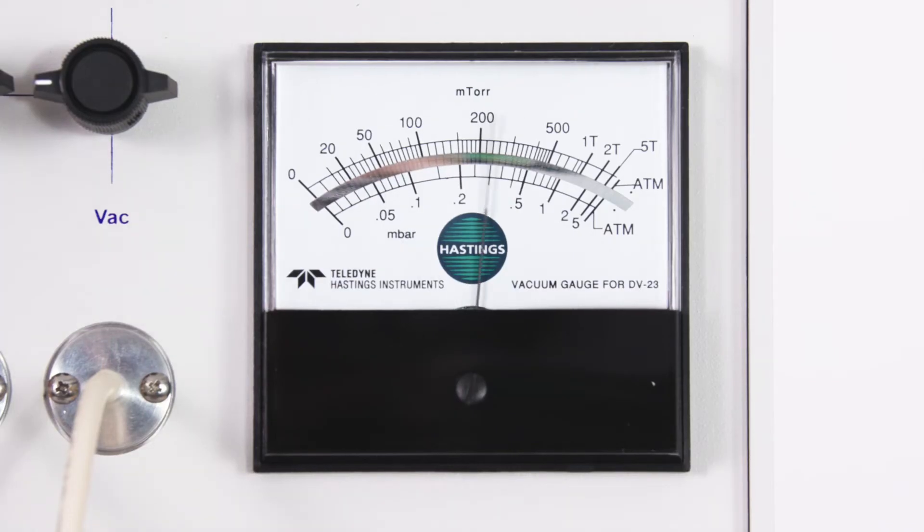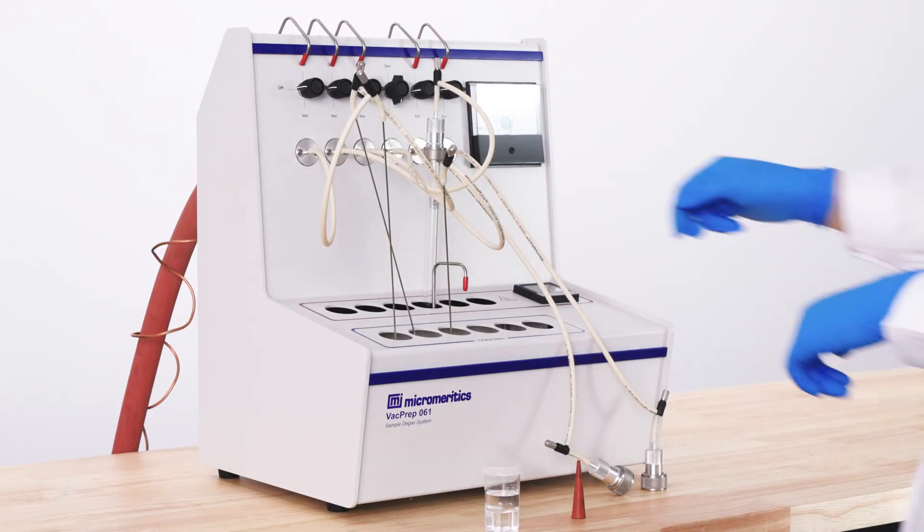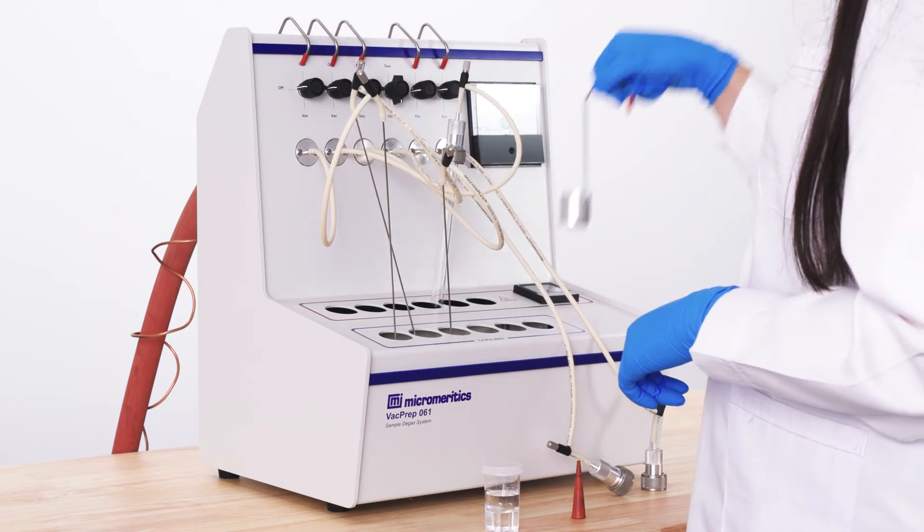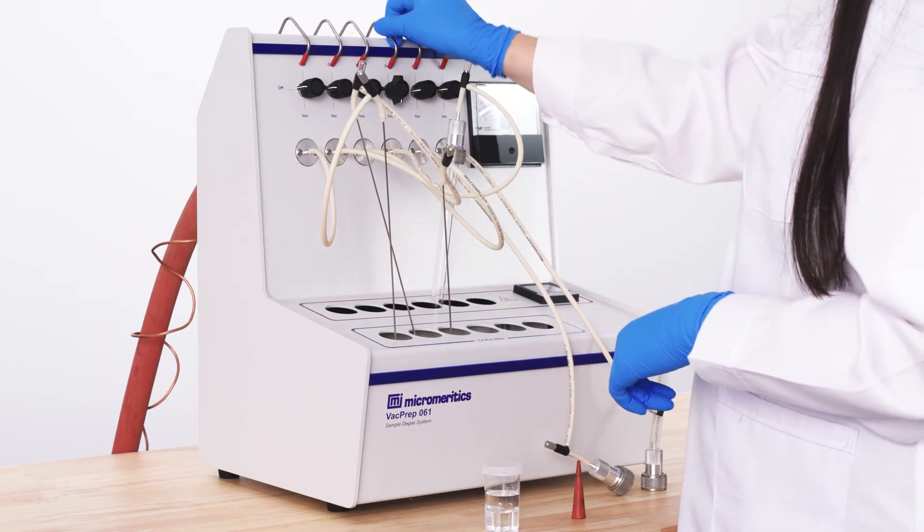As a vacuum is pulled, the gauge should read the decrease in pressure. When the degas process is complete, move the sample to the cooling station and allow to cool.